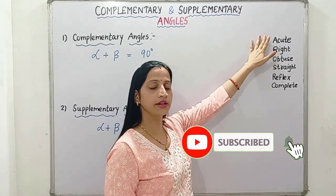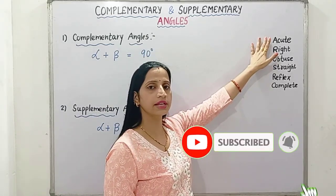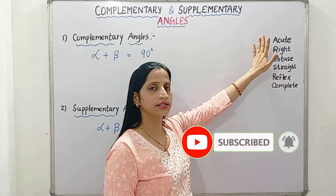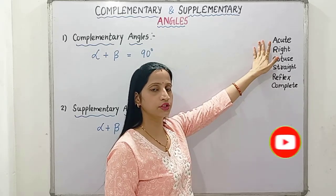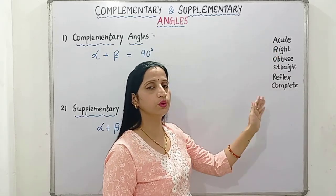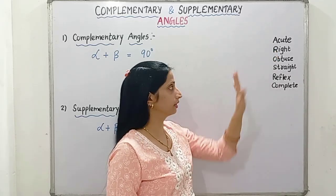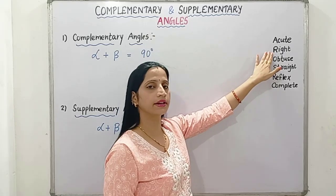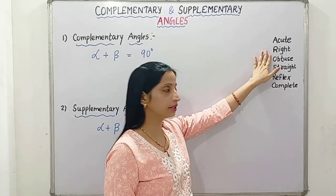Acute angle — acute angle means the angles which are less than 90 degrees, which are between 0 to 90 degrees. Right angle — right angle is of 90 degrees.